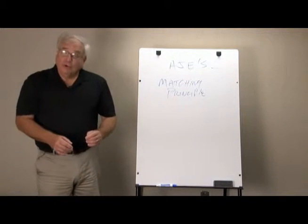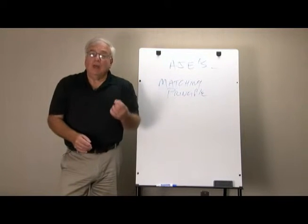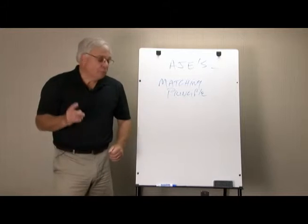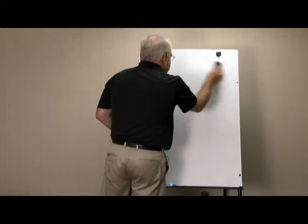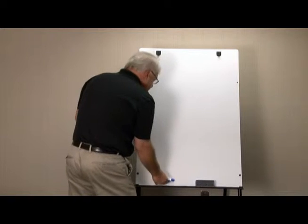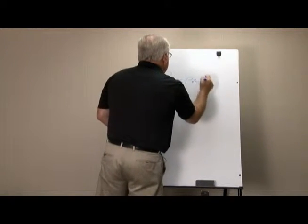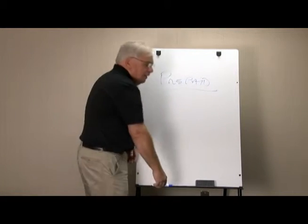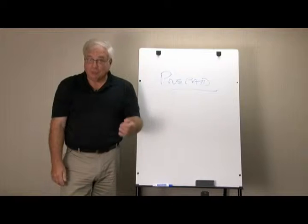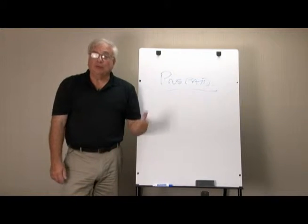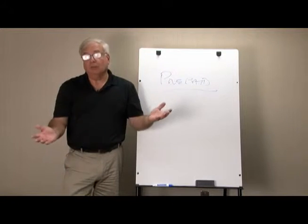There are four types of adjusting journal entries that we'll look at in our session, and the first one is known as a prepaid type adjustment. When you hear prepaid, you think of prepaid insurance, and that's absolutely right. One of the situations that requires this adjustment is when we buy insurance for our company vehicles.